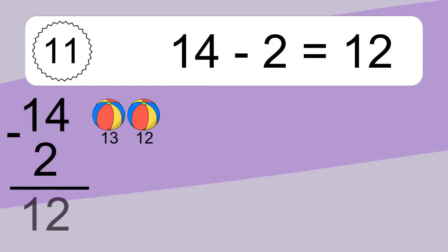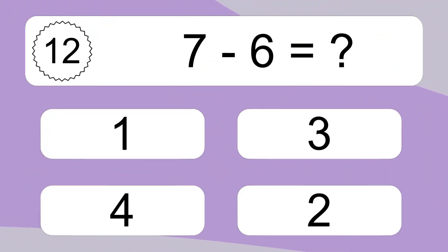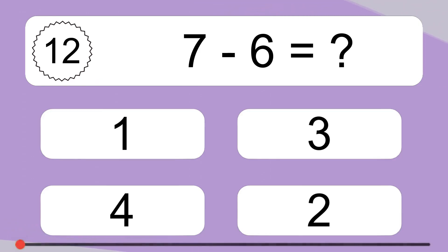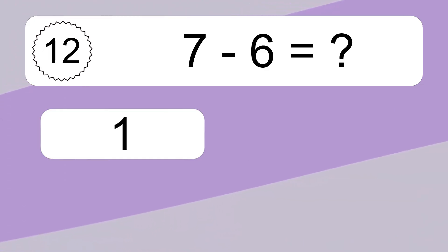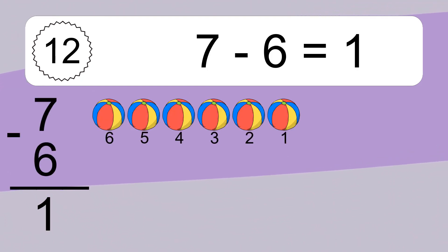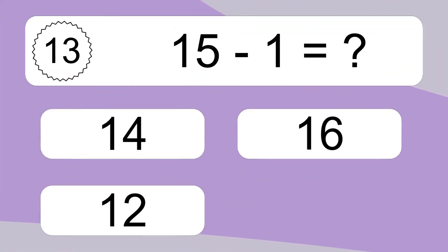14 minus 2 equals 12. Let's count it: 13, 12. 14 minus 2 equals 12. 7 minus 6 equals what? 14 minus 6 equals 1. Let's count it: 6, 5, 4, 3, 2, 1.